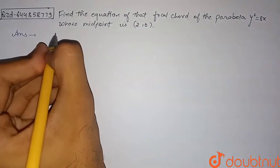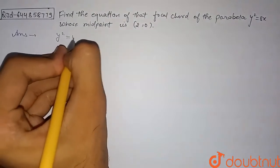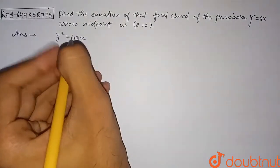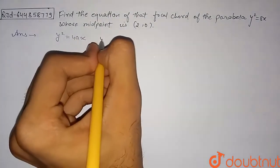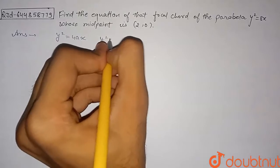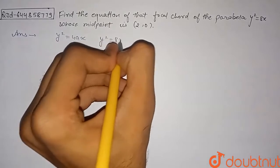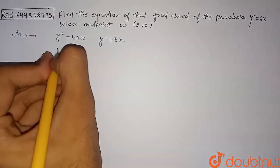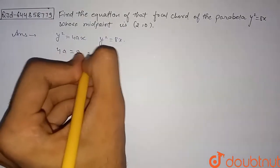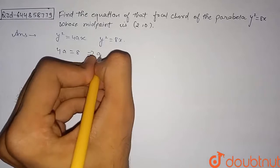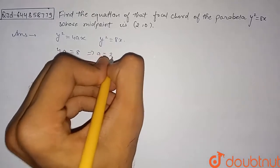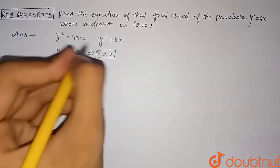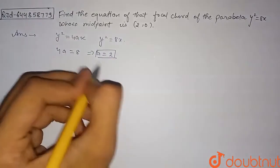The general equation of parabola is y² = 4ax. Our given parabola is y² = 8x. So from here, 4a = 8, which gives us the value of a equal to 2. Now we will use the concept of chord with a given middle point.